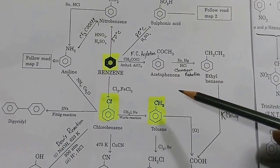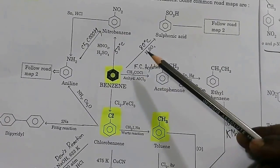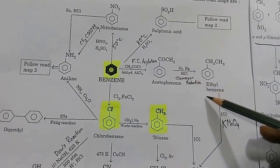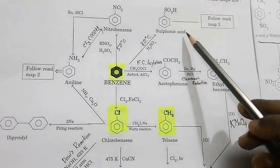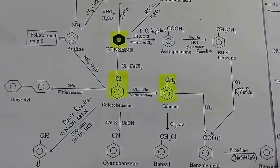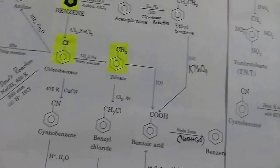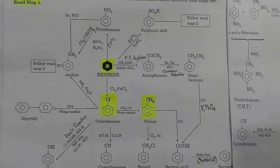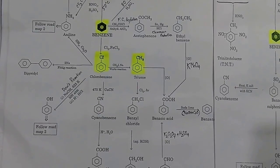From benzene we can convert to different compounds like acetophenone, ethylbenzene, sulfonic acid, and nitrobenzene — these are the compounds we have discussed. Now let's move to the next part of the chart.